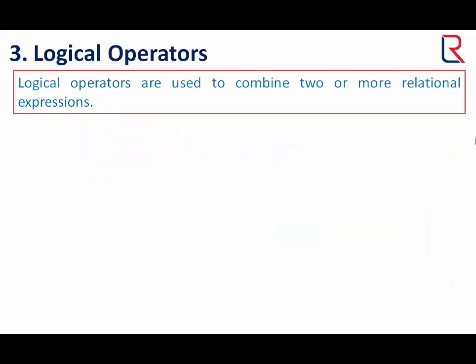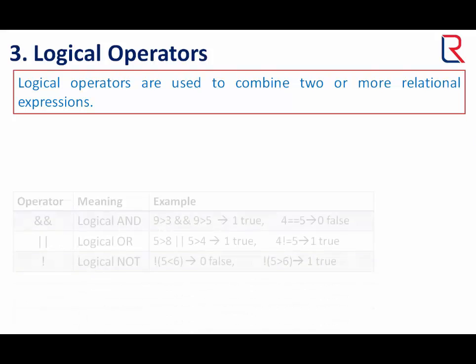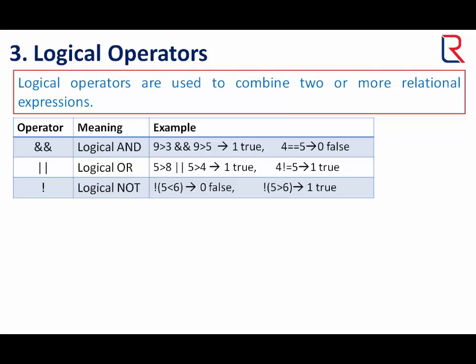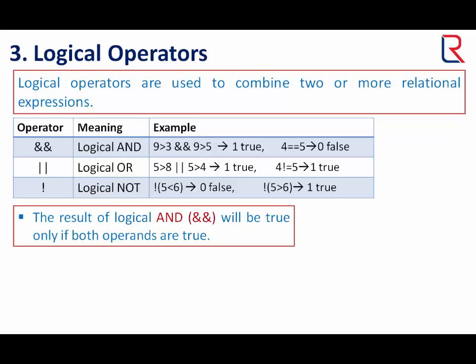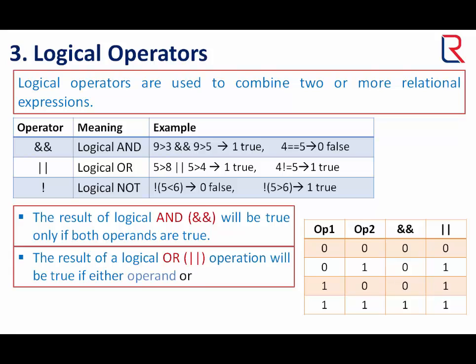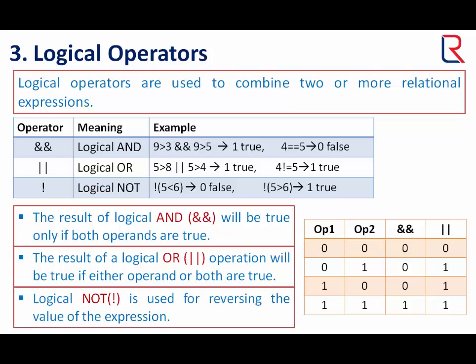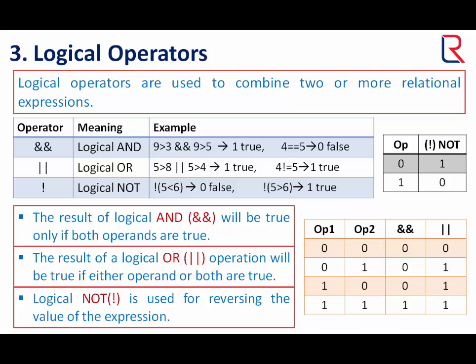Now let's see the logical operators. Logical operators are used to combine two or more relational expressions. The logical operators are: double ampersand sign for logical AND, double pipe sign for logical OR, and exclamation sign for logical NOT. The result of logical AND will be true only if both operands are true. The result of logical OR will be true if either operand or both are true. Logical NOT is used for reversing the value of the expression. We can see the results of logical AND, OR, and NOT operators in tables.